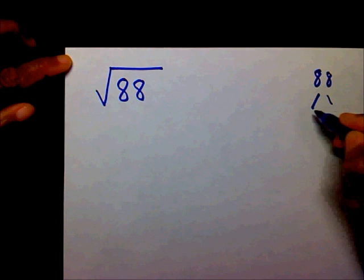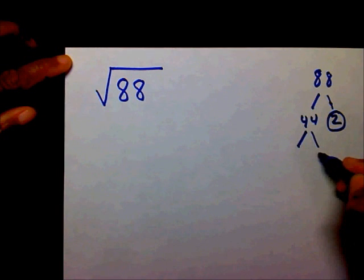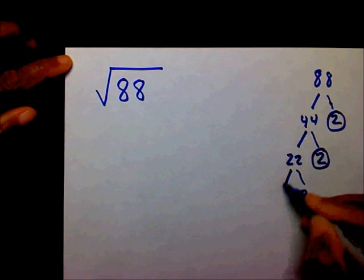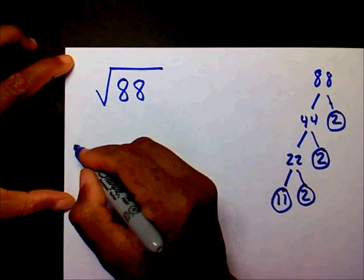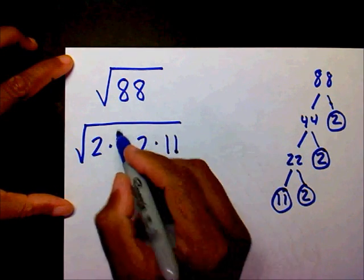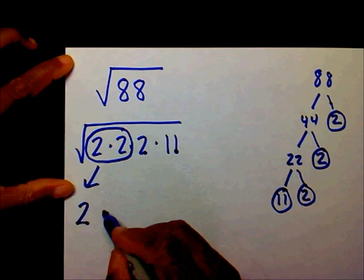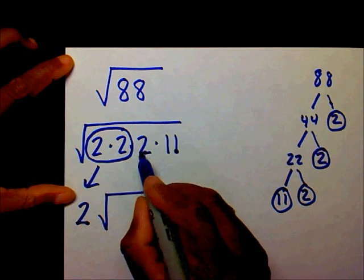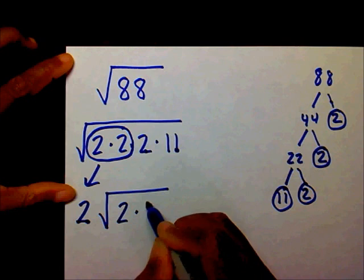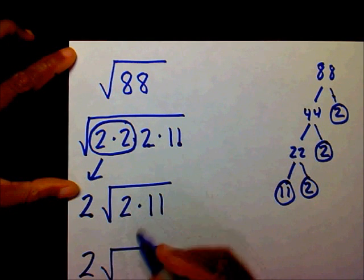Let's make a factor tree for 88. Both resulting numbers are prime. So underneath my radical, I'm going to write 2 times 2 times 2 times 11. The pair of 2's is a perfect square so that 2 goes outside. Inside, I still have a 2 and 11. I'm going to multiply 2 times 11, which is 22. So radical 88 equals 2 radical 22.